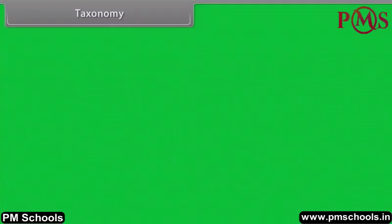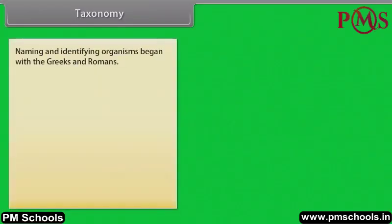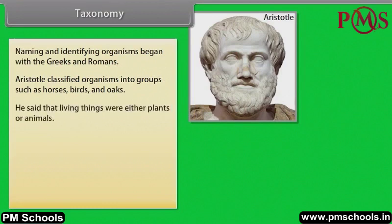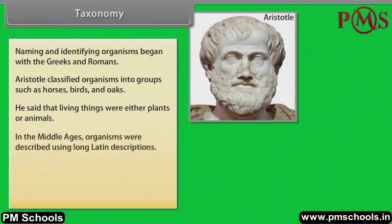Taxonomy — naming and identifying organisms began with Greeks and Romans. Aristotle classified organisms into groups such as horses, birds and oaks. In the middle ages, he said that living things were either plants or animals. In the middle ages, organisms were described using long Latin descriptions.